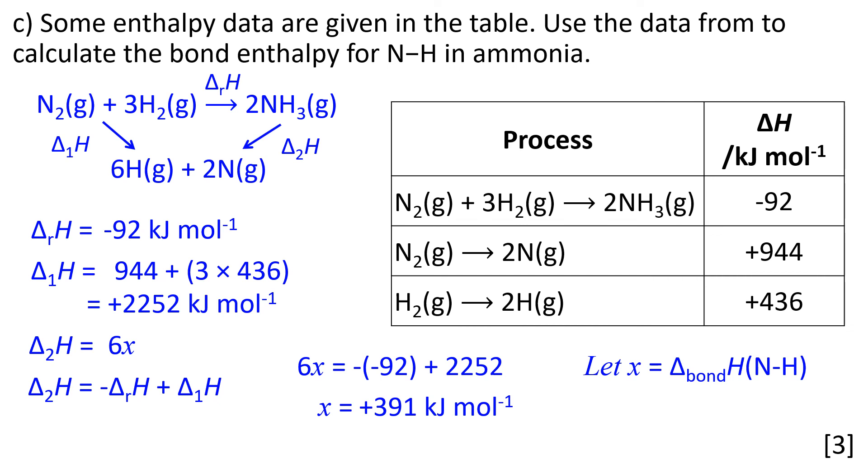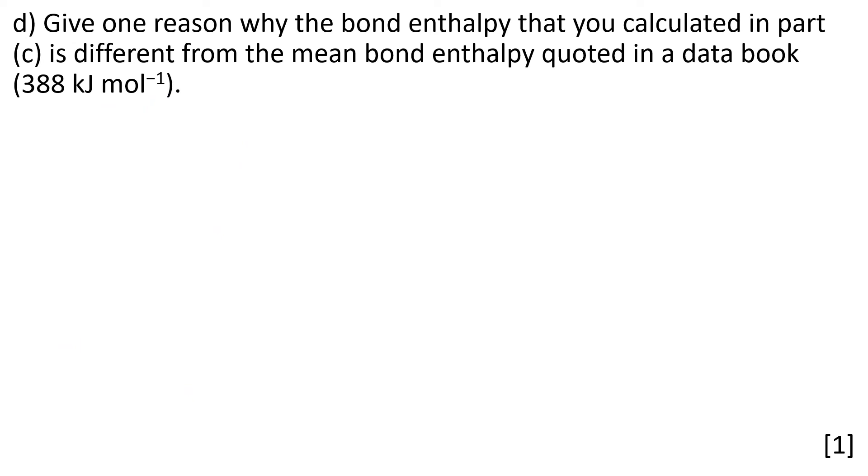Okay, the final part of this question is a reason why the bond enthalpy we calculated in part c could be different from the mean enthalpy quoted in data books. Any bond enthalpy is an average of that type of bond in different molecules. So N-H in an amine or N-H in ammonia could be slightly different environments with slightly different energies.